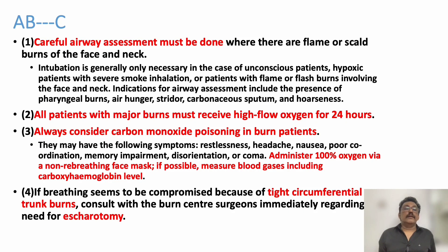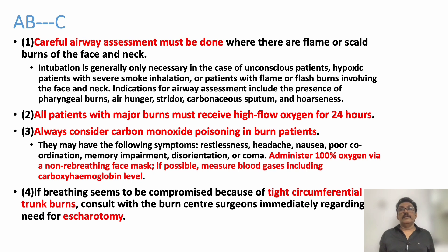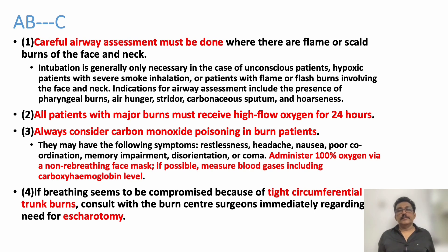Give 100% oxygen via a non-rebreathing face mask if possible. Measure blood gases and carboxyhemoglobin levels — point-of-care machines can do this. Continuously give oxygen and reassess: if GCS is full and no altered behavior or flapping tremors, oxygen can be stopped. Remove all clothing. Patients with tight circumferential trunk burns may require escharotomy, requiring a surgeon's involvement, as some patients need immediate surgical correction to prevent complications.